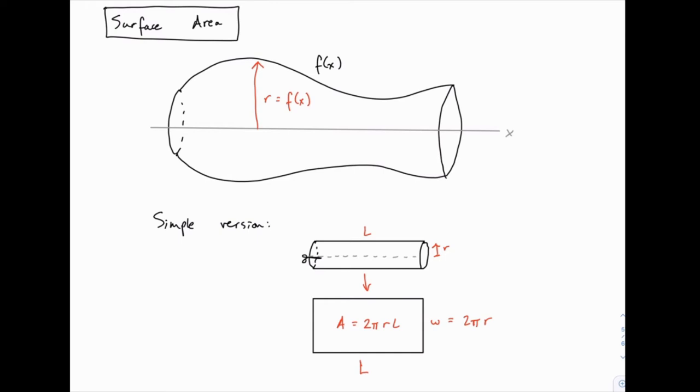As long as we're revolving around the x-axis, the height of the function is the same as the radius. Because as we saw with disks and washers, the radius is just the distance between the center of rotation and the outer edge. For surface area, we're not going to do anything complicated like revolving around other lines. We're going to keep it relatively simple here, so the radius will just equal the function itself.